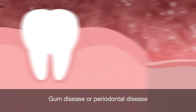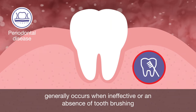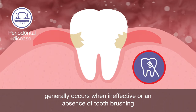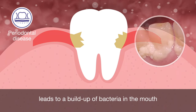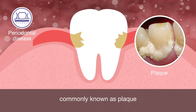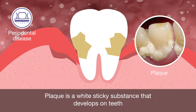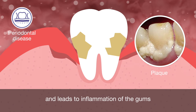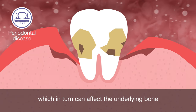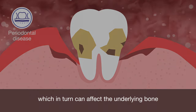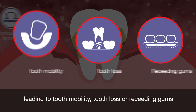Gum disease, or periodontal disease, generally occurs when ineffective toothbrushing, or an absence of toothbrushing, leads to a build-up of bacteria in the mouth, commonly known as plaque. Plaque is a white sticky substance that develops on teeth and leads to inflammation of the gums, which in turn can affect the underlying bone, leading to tooth mobility, tooth loss, or receding gums.